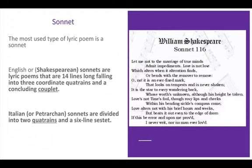So let's read the first quatrain: 'Let me not to the marriage of true minds admit impediments. Love is not love which alters when it alteration finds, or bends with the remover to remove.' So 'minds' and 'finds' rhyme, and 'love' and 'remove' rhyme. So we've got A, B, A, B — where 'minds' and 'finds' is A and 'love' and 'remove' is B. And then we have a concluding couplet at the end where 'proved' and 'loved' serve as the concluding couplet.